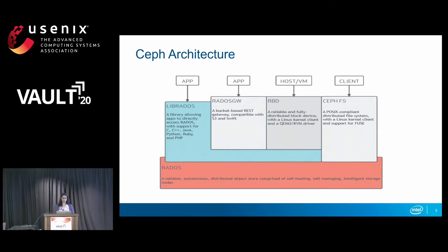Ceph is a software-defined distributed storage system that delivers object, file, and block storage in a single unified system. It gathers data from various clients such as RADOS Gateway — which is compatible with S3 and Swift — RBD, CephFS, or any custom implementations using the librados API. There's no single point of failure; it's hardware agnostic. It receives data and stores objects, where each object is essentially stored as a file on a disk, handled by object storage daemons in the backend.